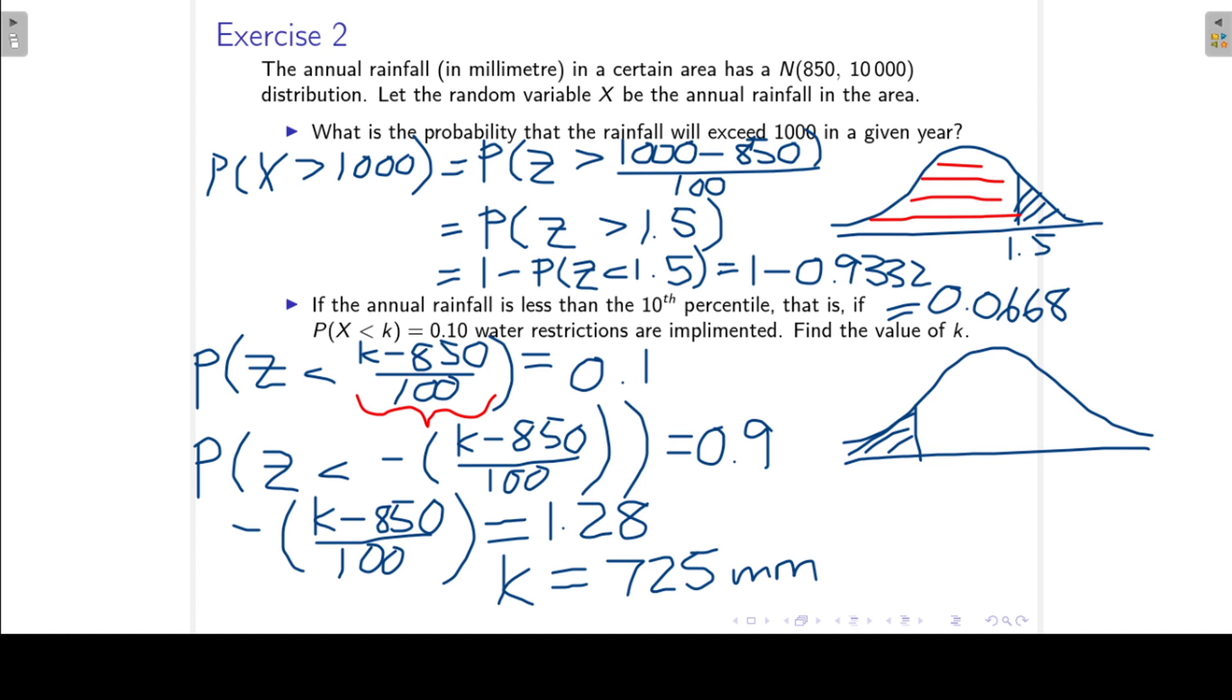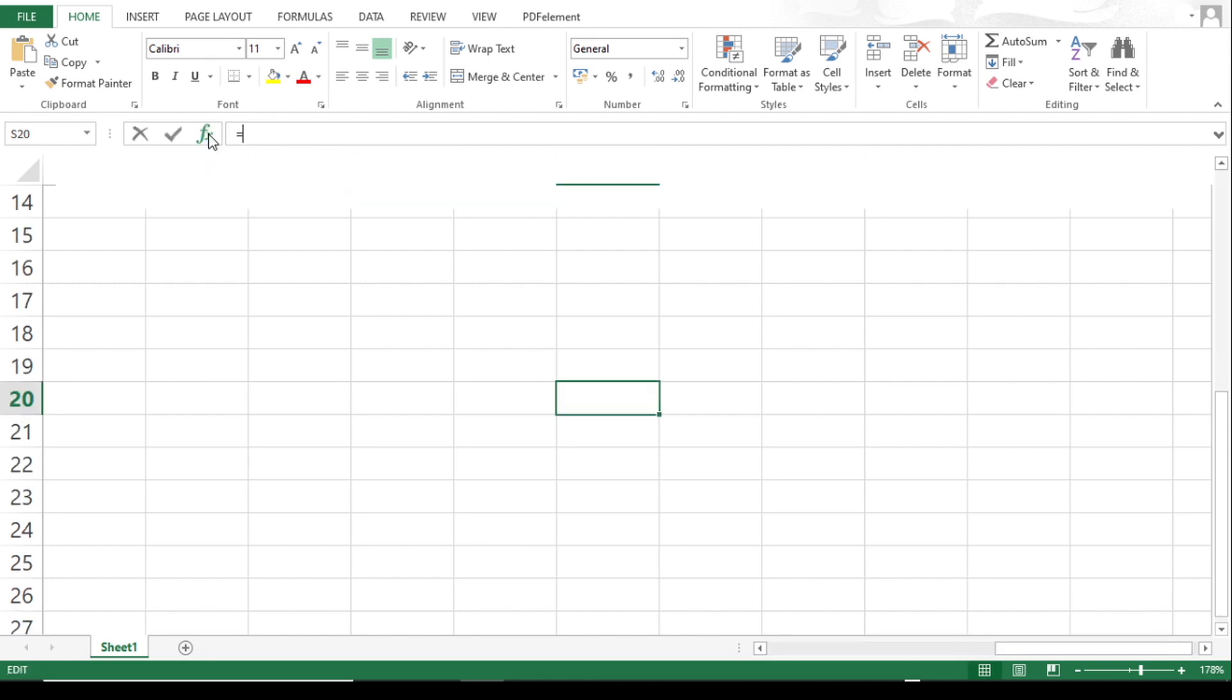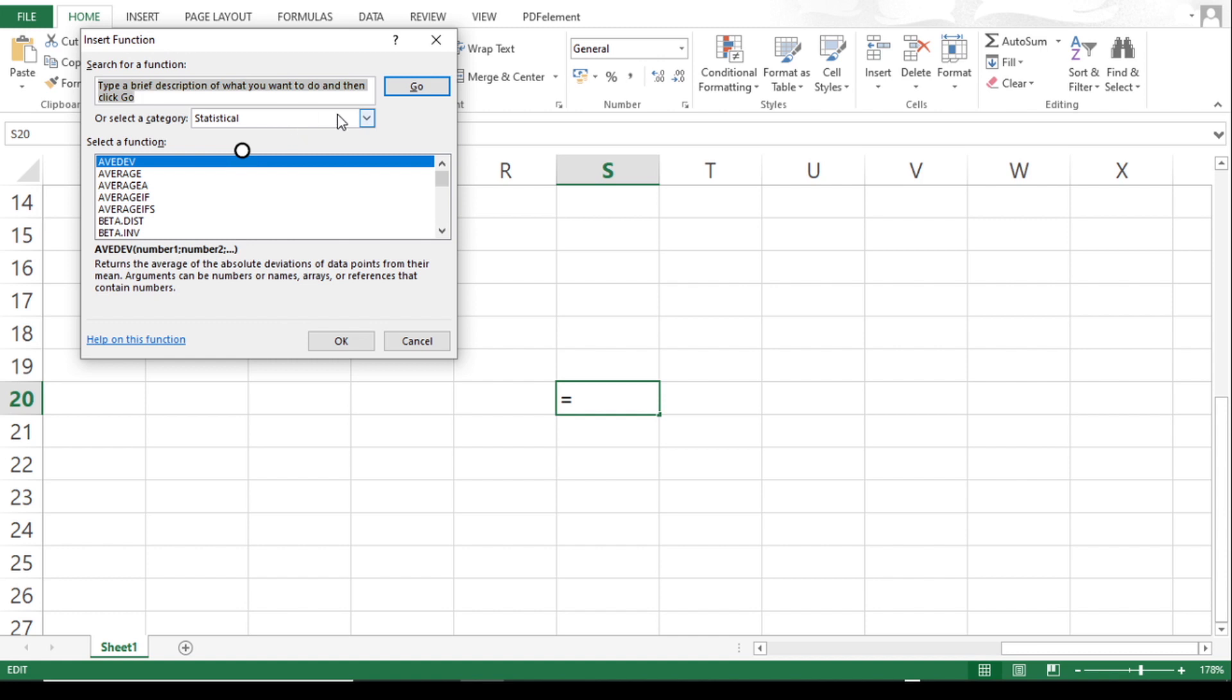We can also, of course, do this in Excel. So we can redo exercise 2 in Excel. Okay, so I want to find the probability that z is greater than 1.5. So I go to my insert function button. I choose the category statistical, and then I go down to the normal distribution.